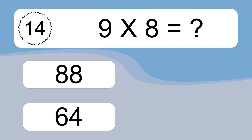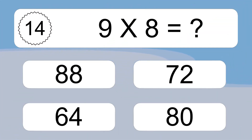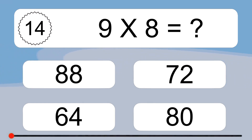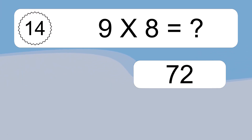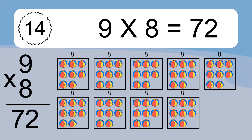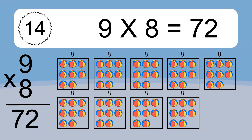9 times 8 equals what? 9 times 8 equals 72. We have 9 boxes, and each box has 8 colorful balls inside. If you count all the balls in all the boxes together, you will have 9 times 8 balls. This equals 72 balls.